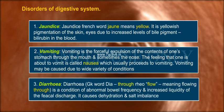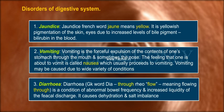3. Diarrhea: From the Greek words 'dia' (through) and 'rheo' (flow), meaning flowing through. It is a condition of abnormal bowel frequency and increased liquidity of fecal discharge. It causes dehydration and salt imbalance.